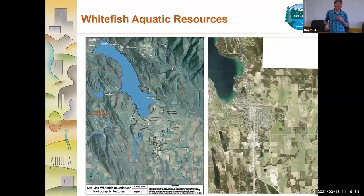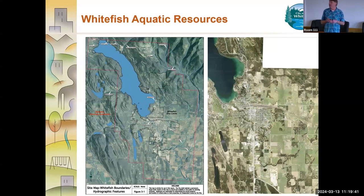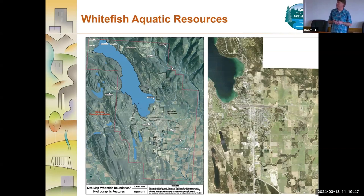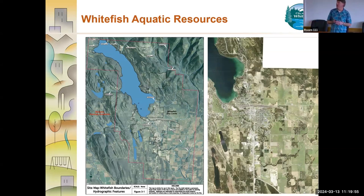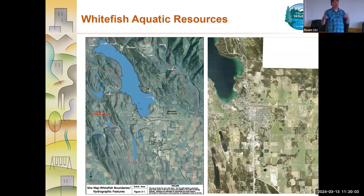I'd like to start with a little background on what formed the foundation of our local area aquatic resources in Whitefish. As many of you know, we're situated in the northwest corner of the state in the Purcell Trench. For thousands of years, we saw several advancements and retreats of glacial continental ice through the Purcell Trench, with the terminal moraine typically ending in the vicinity of Polson, just south of Flathead Lake.